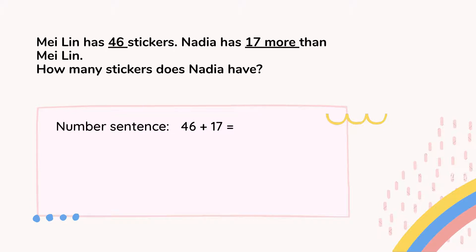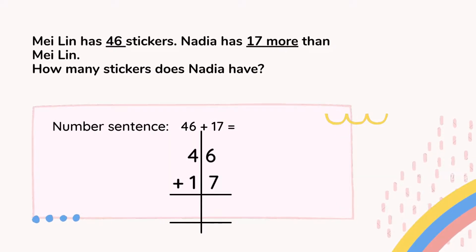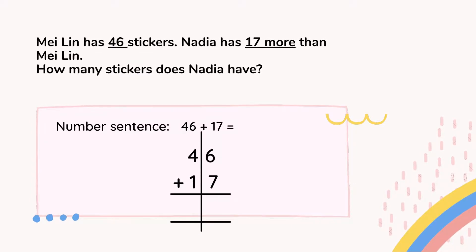So we need to write the number sentence first. We already found the clues: 46 and also 17, and the word 'more' which indicates addition. So I write the number sentence: 46 plus 17 equals. We want to find Nadia's stickers because the question says Nadia has 17 more but we don't know how many stickers Nadia has. That's why we need to write the number sentence and count.